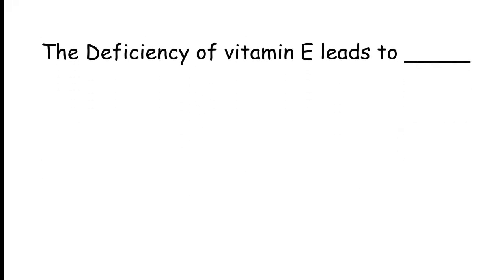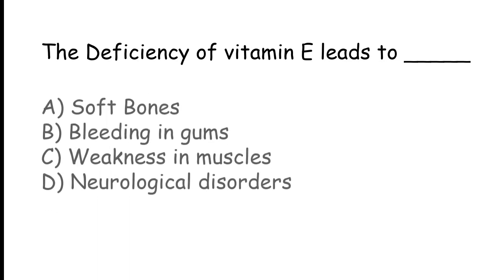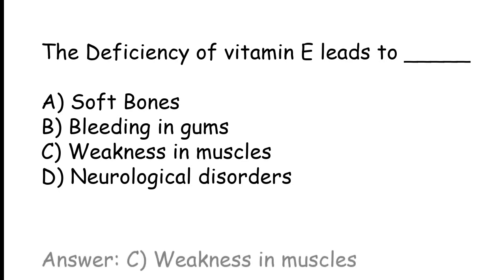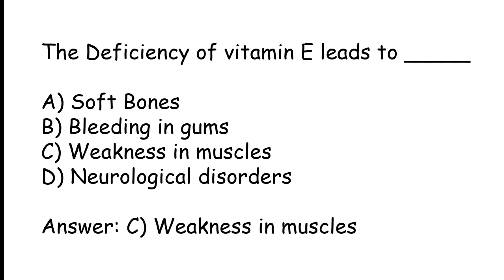The deficiency of Vitamin E leads to: Soft bones, Bleeding gums, Weakness in muscles, or Neurological disorders. The correct answer is Option C. The deficiency of Vitamin E leads to weakness in muscles.